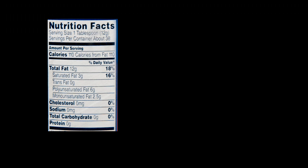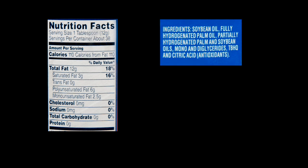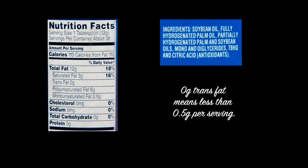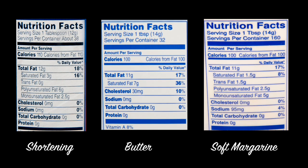Although the shortening nutrition facts label states it has 0 grams of trans fat per serving, shortening does contain partially hydrogenated oil. U.S. regulations currently allow manufacturers to claim 0 grams of trans fat if the total amount is less than 0.5 grams per serving. Comparing the three most common types of fats used in the United States, vegetable shortening appears to be healthier than butter or margarine. Although current research indicates that saturated fat is preferable to trans fat, it's still important to limit total saturated fat in your diet.